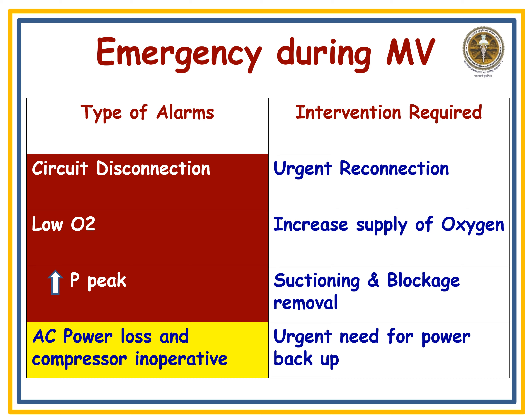Troubleshooting measures for nurses: Do not ignore red color alarms. For circuit disconnection — immediately reconnect the circuit. For low oxygen concentration or low oxygen supply — immediately change the oxygen supply source. For high peak pressure (caused by a blockage in the airway) — immediately perform suctioning or blockage removal. For AC power loss and compressor inoperative — immediately provide a power backup to the ventilator.